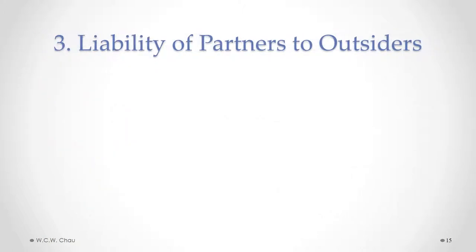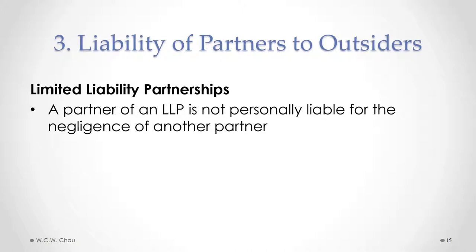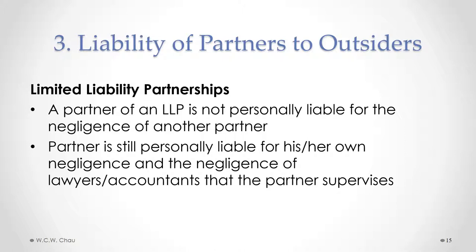The rules regarding liability are slightly different for limited liability partnerships or LLPs, which are available only to accountants and lawyers. A partner of an LLP is not personally liable for the negligence of another partner. If a client sues the firm for negligence, only the partner who committed the negligence is personally liable — their personal assets are at risk, but the personal assets of other partners are not. A partner is also personally liable for the negligence of other lawyers or accountants in the firm that that partner supervises.